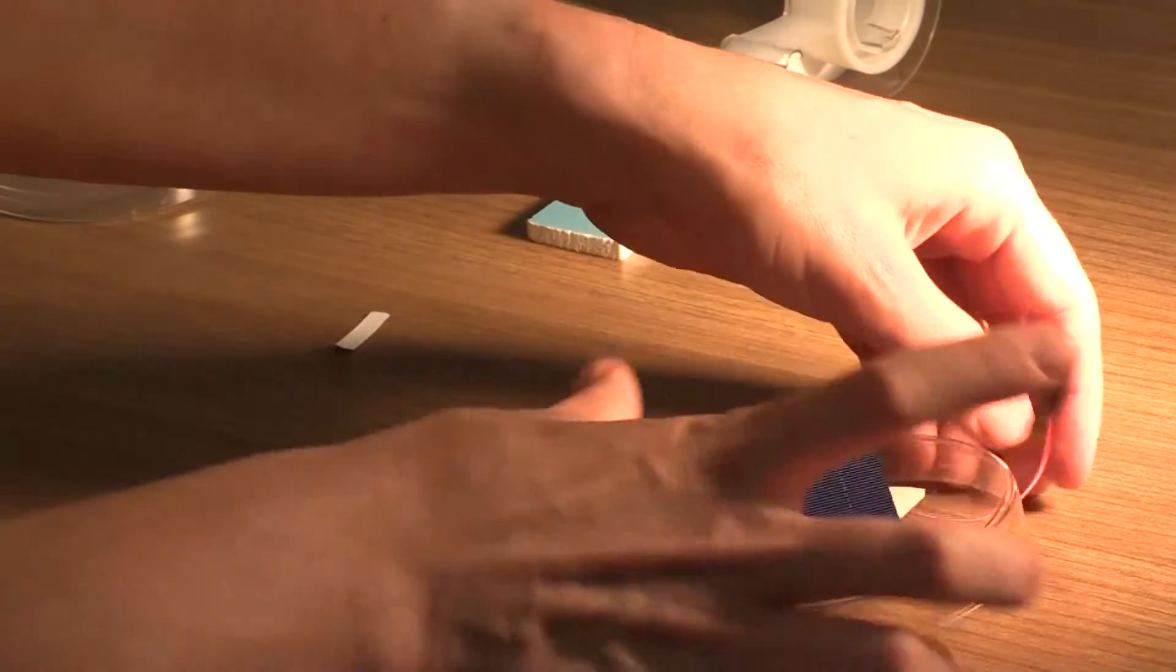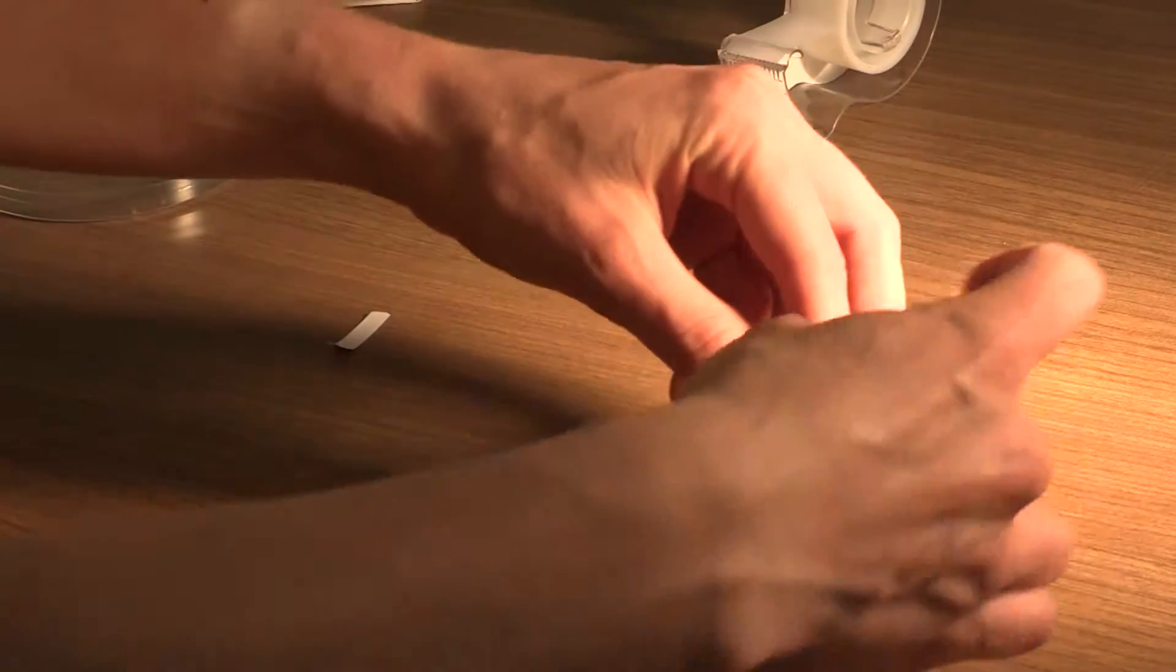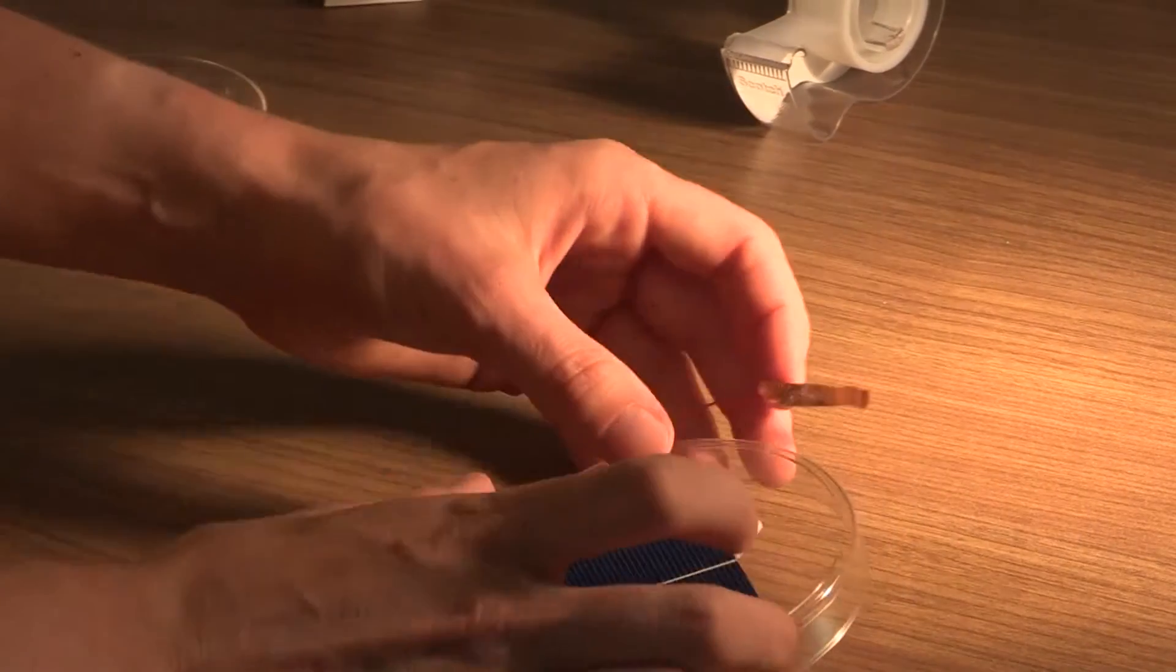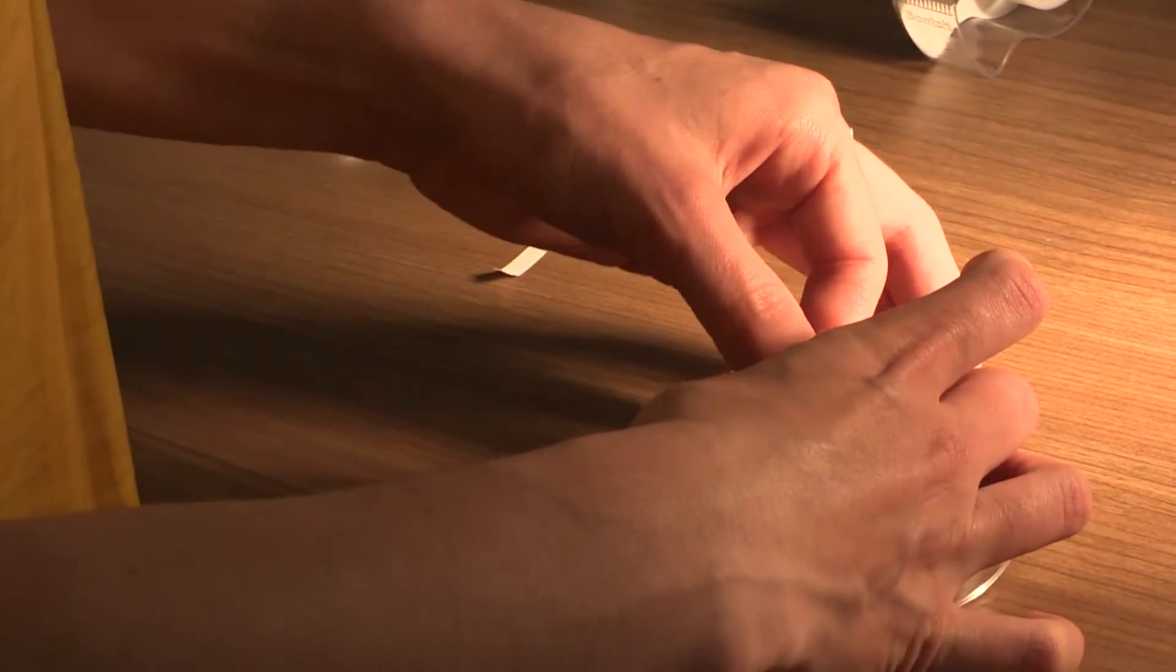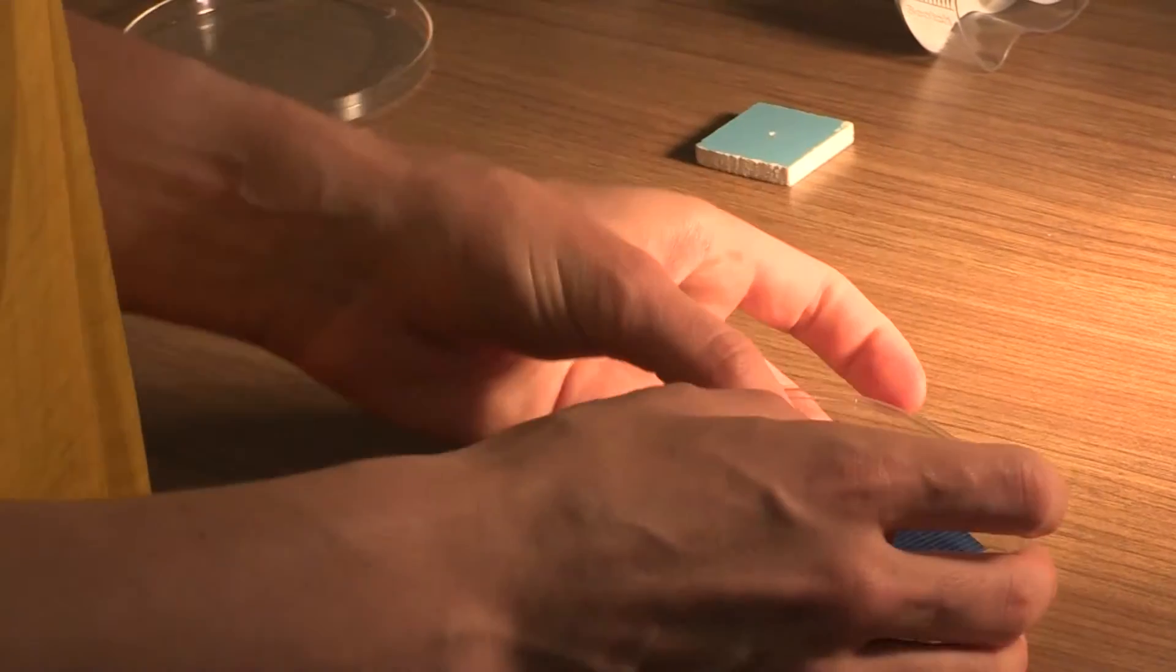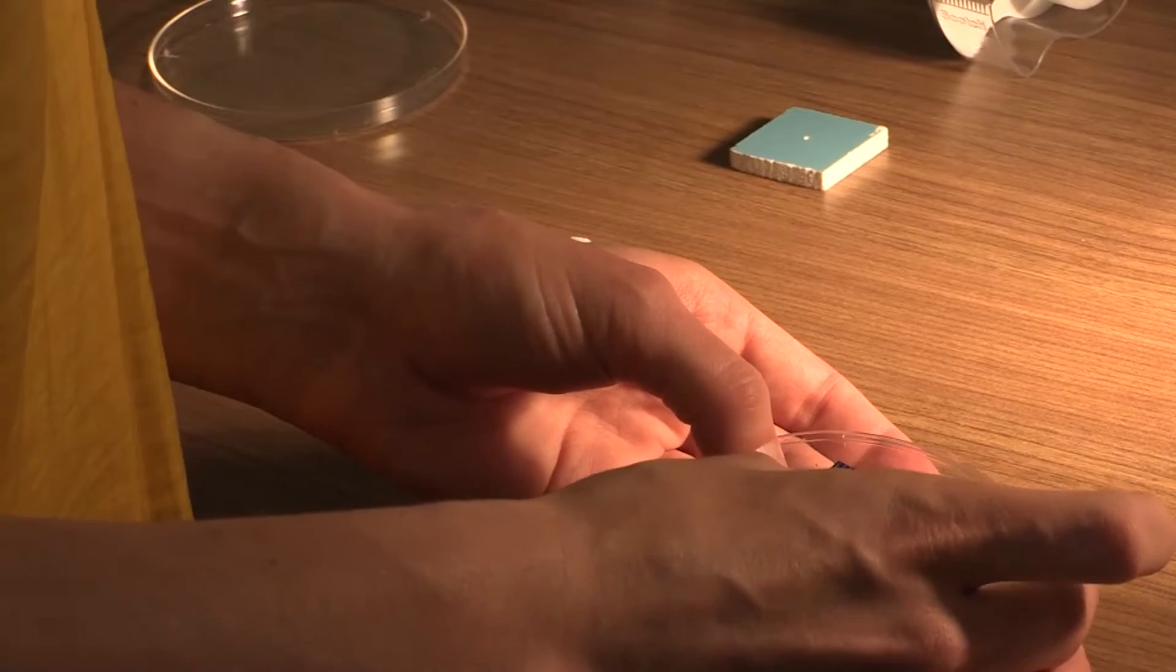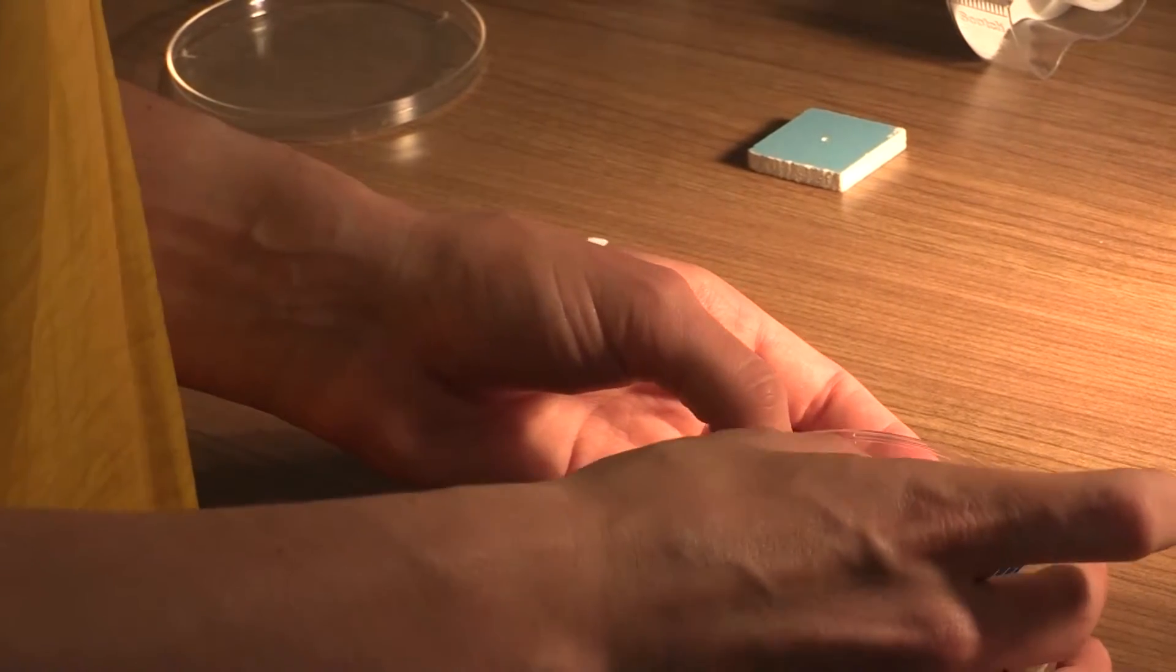Do the same thing here where you attach the tape to the copper wire first, then line that up on the solar panel before smoothing it down. Be gentle because the solar panel is very easy to break.